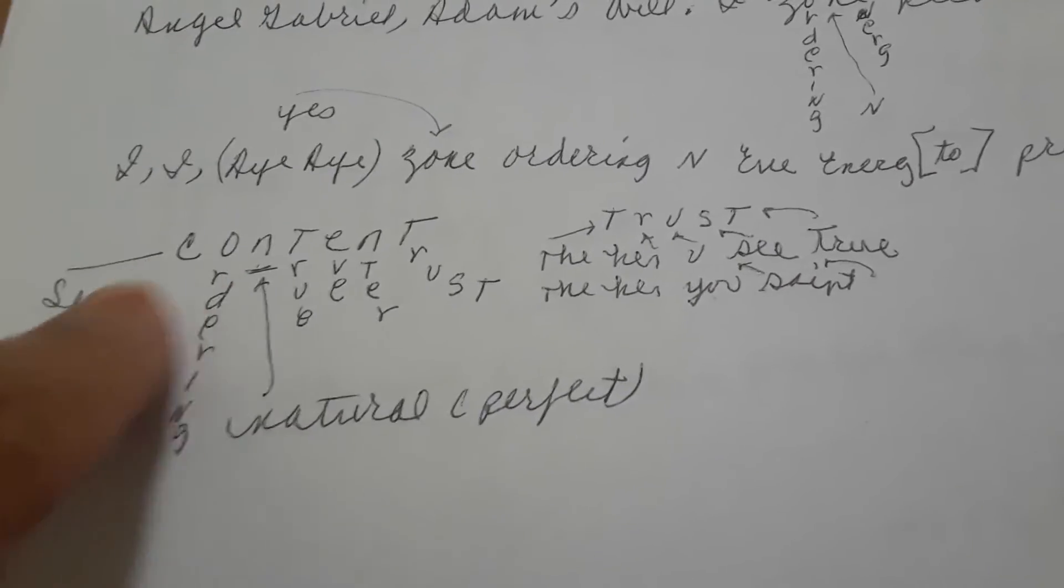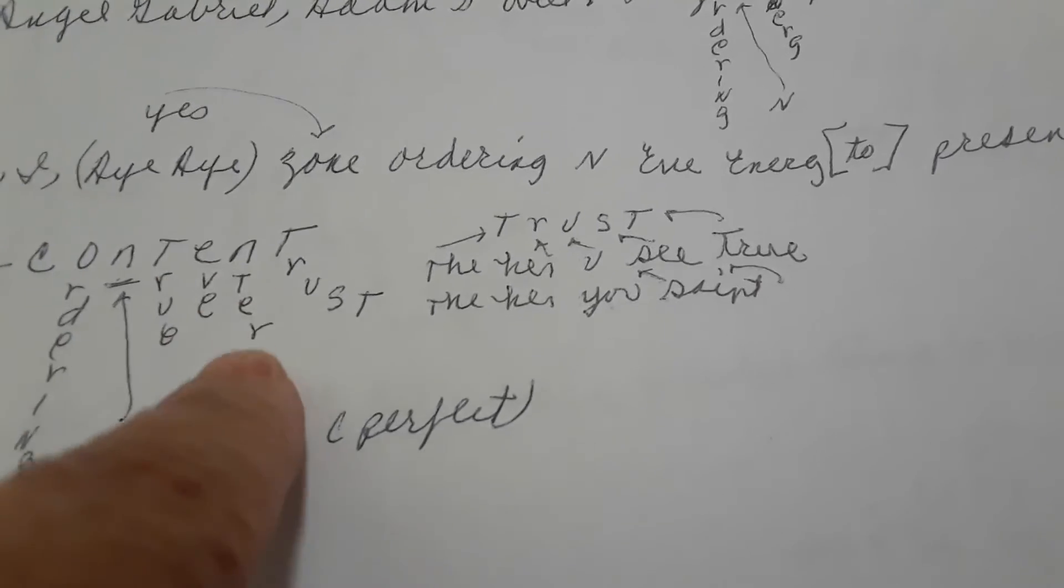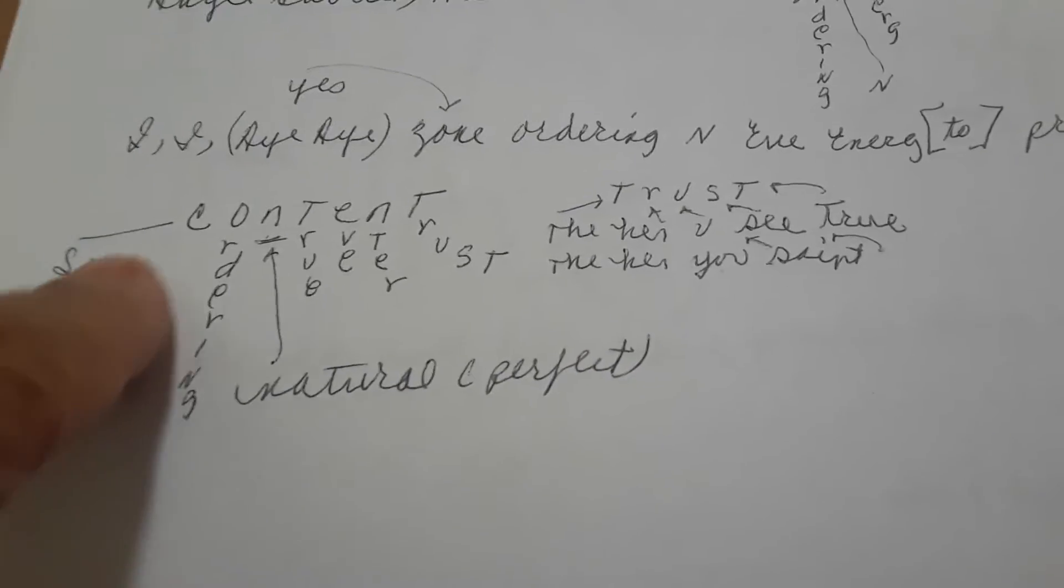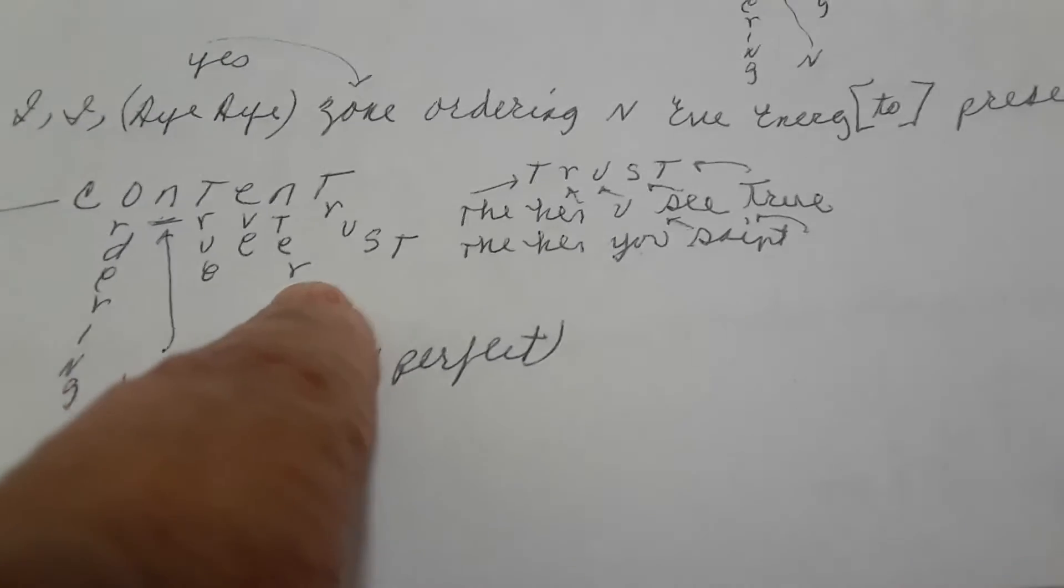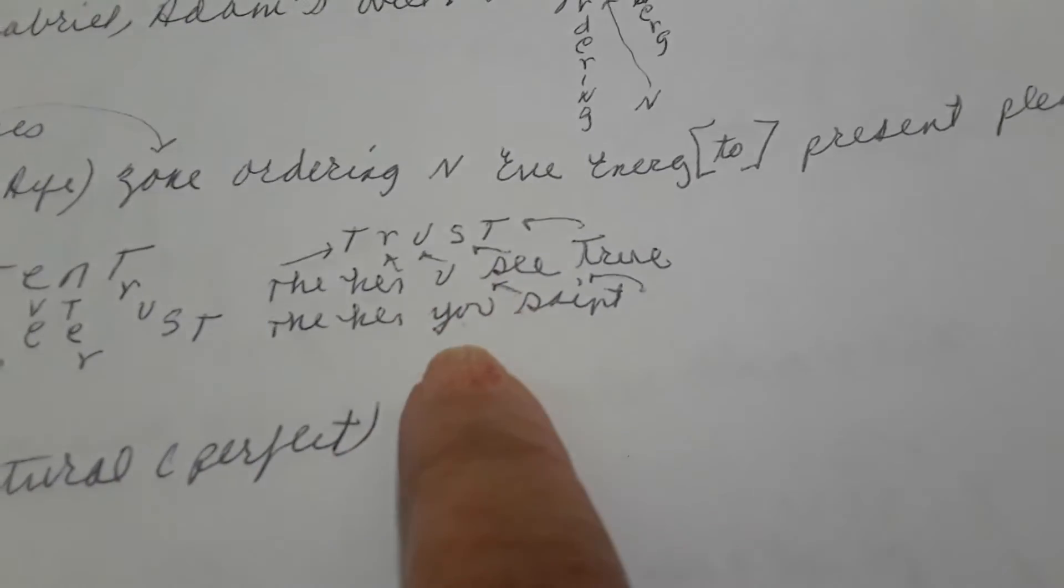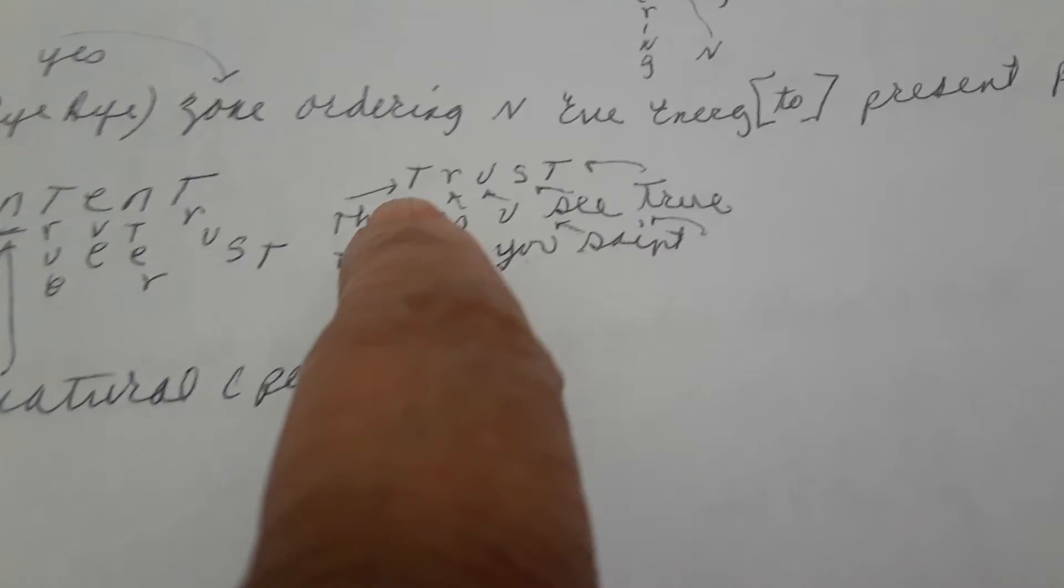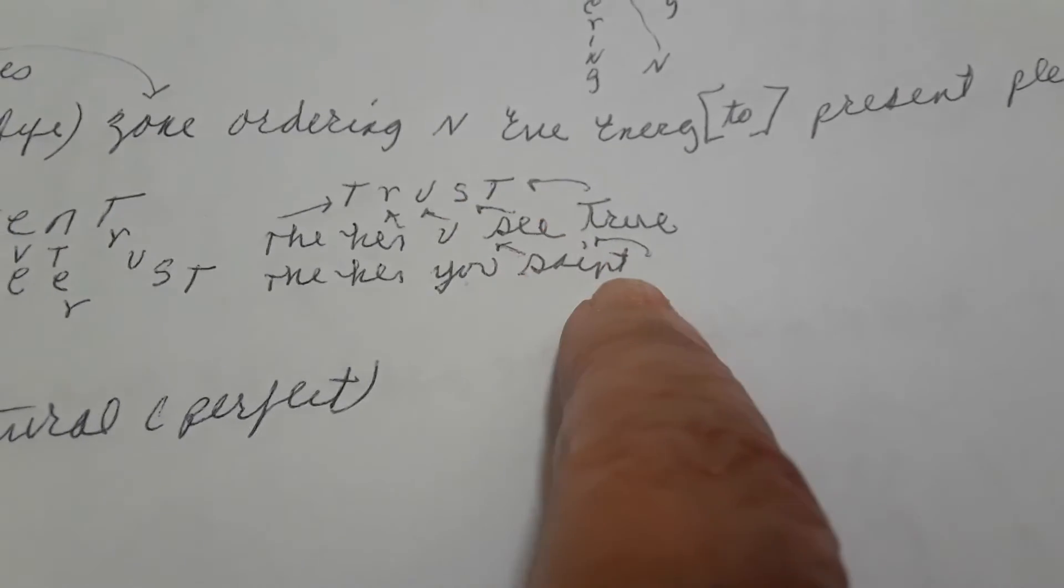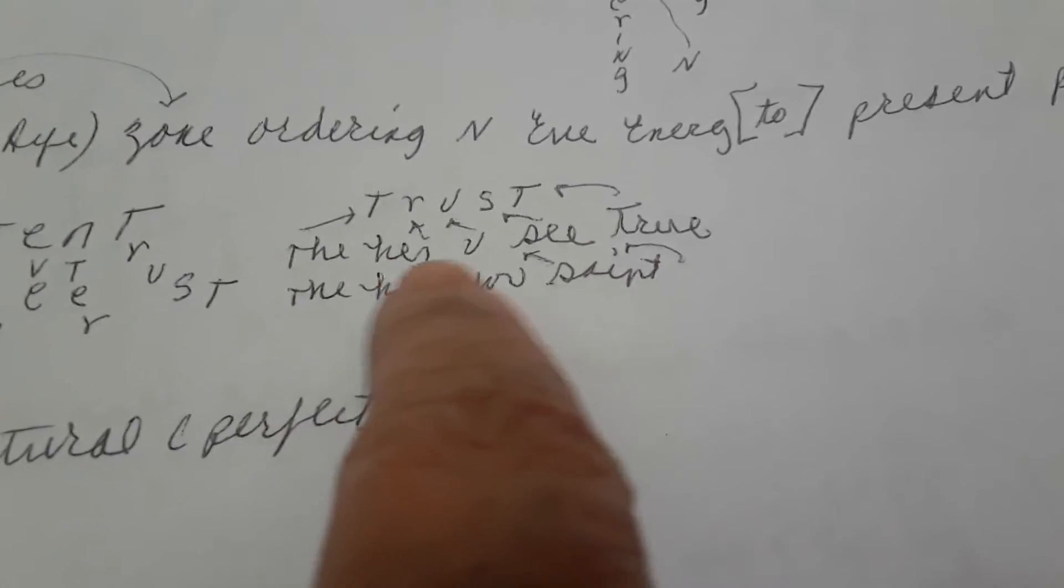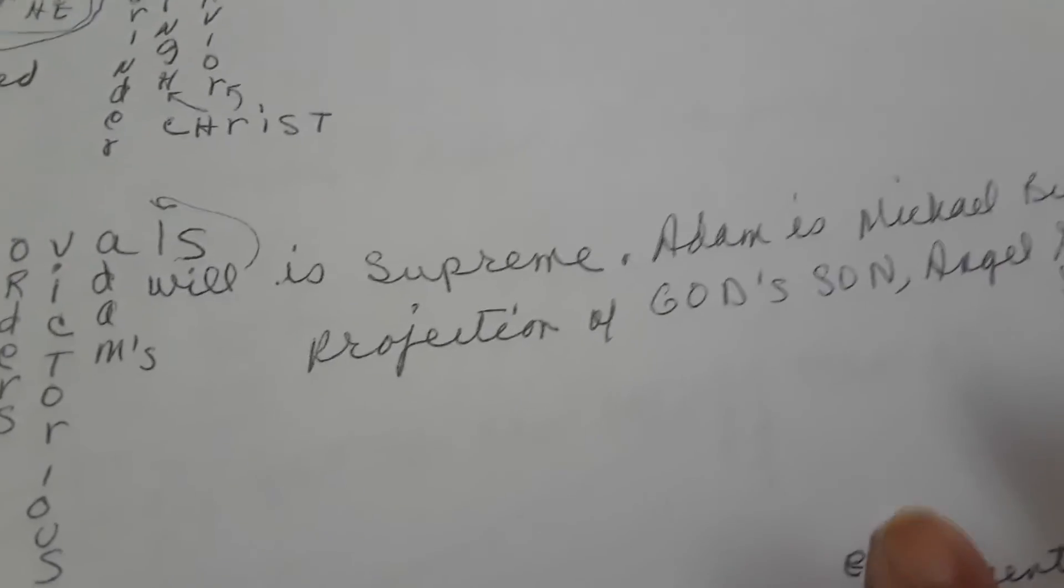Then content. C for see, O for ordering, N for natural and perfect, T for true, E for Eve, N for enter, T for trust. See ordering, natural and perfect, true Eve energy entering trust. Trust. T for the, R for her, U for you, S-T for see true. The her you see true, the her you saint. Okay, they're saying Eve is true. What she sees is true, and they're saying she's a saint.